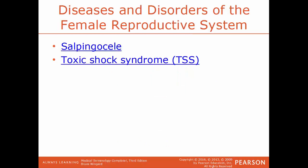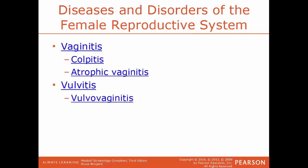Salpingocele is a herniation of the fallopian tube. TSS, toxic shock syndrome, is an acute septicemia in women — a life-threatening condition. Vaginitis is the inflammation of the vagina, also known as colpitis. A version of vaginitis is atrophic vaginitis — inflammation of the vagina caused by the thinning and shrinking of the tissues of the vagina; the tissue is atrophying and that is causing the inflammation. Vulvitis is inflammation of the vulva. Vulvovaginitis is an inflammation of both the vulva and the vagina.